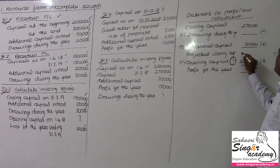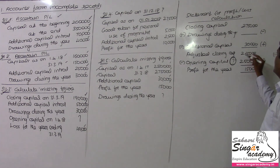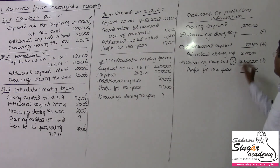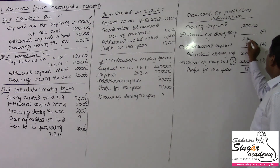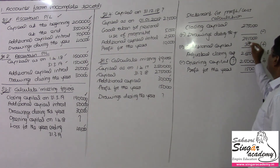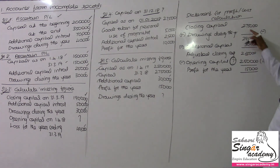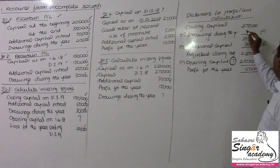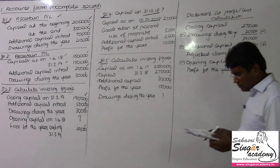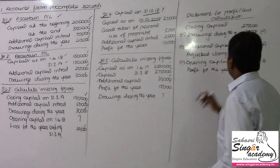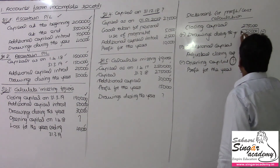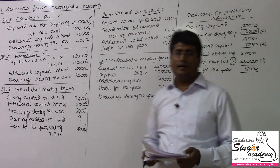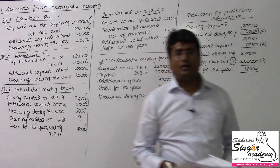So, 250 plus 15 gives 2,65,000 as the adjusted capital. Then 265 plus 30 gives 2,95,000. In that way, 295 minus 275,000 equals 20,000 rupees. So, drawings should be 20,000 rupees. It will be very clear. I hope you could understand all these concepts.